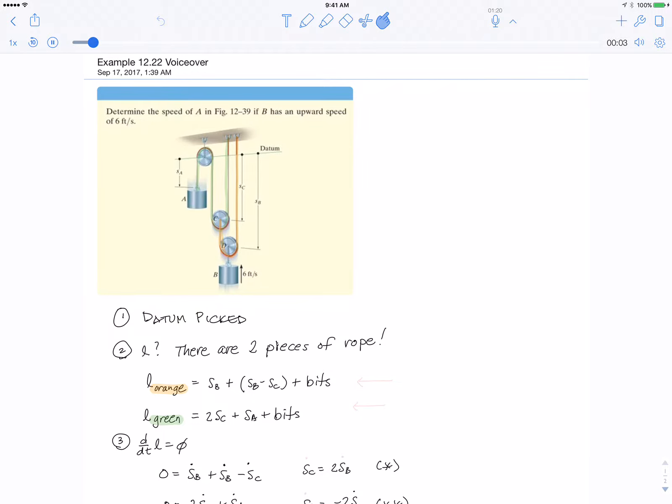In this problem, a key aspect is that there are two pieces of rope. I've gone ahead and highlighted them orange and green. Here you can see I've written out the length of the orange rope in terms of the coordinate system.